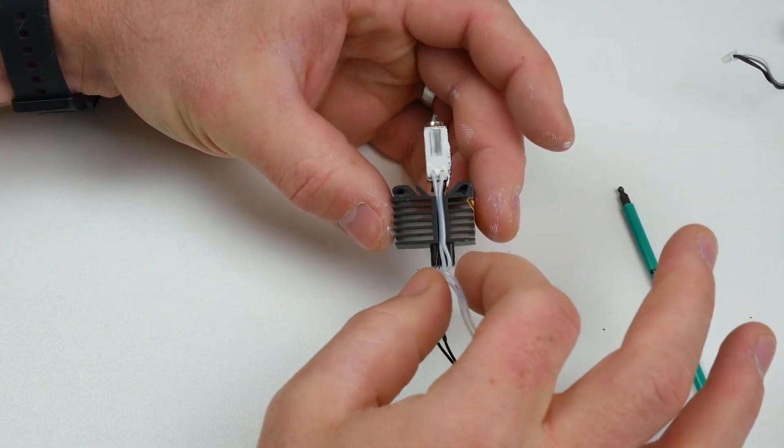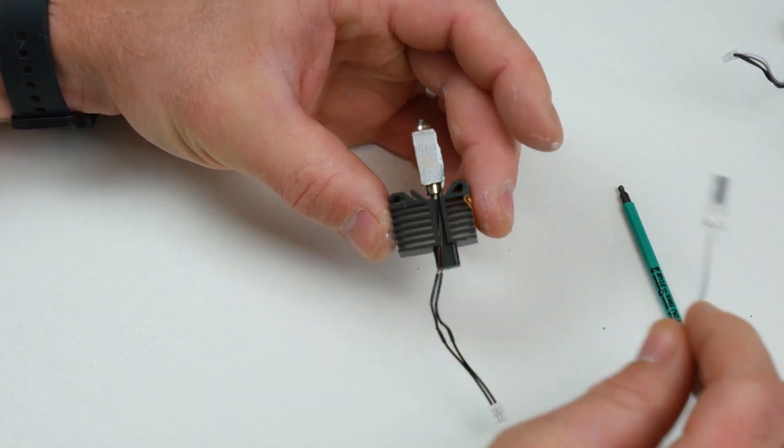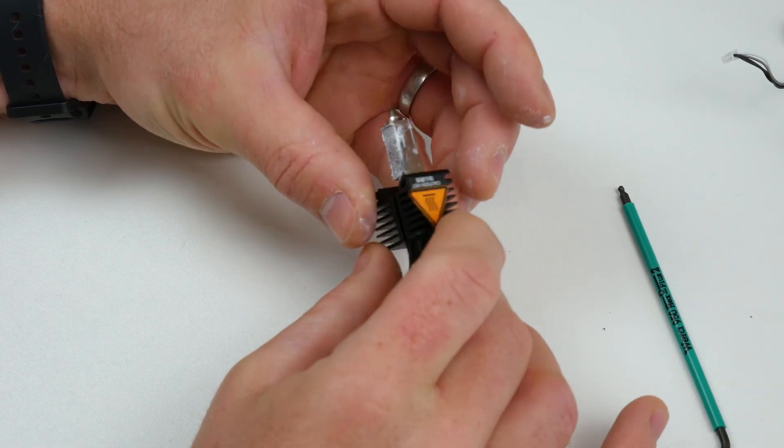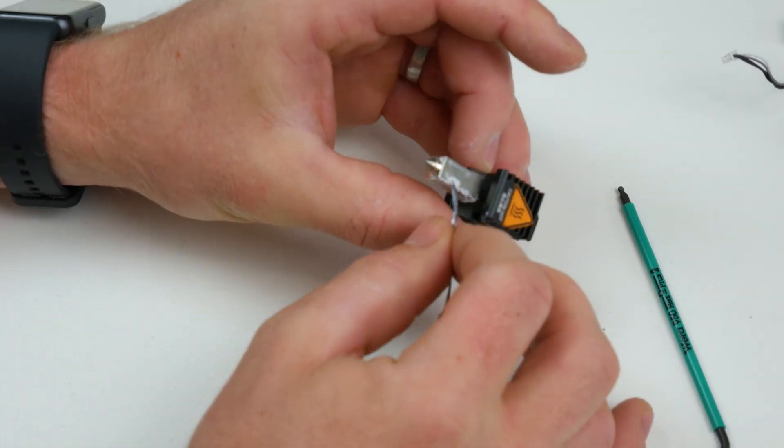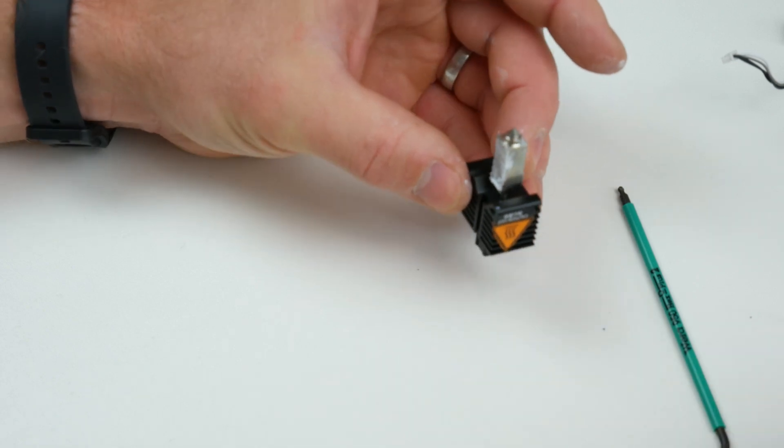Once we've done that, we can now carefully remove the heating element, pop that over to one side, and we can now carefully remove the thermistor or temperature sensor. We'll pop that over to one side as well.